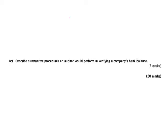Part C for seven marks asks you to describe substantive procedures an auditor will perform in verifying the company's bank balance. Presumably seven procedures would be required to get the seven marks. Remember, substantive procedures look at things such as valuation, existence, ownership, and perhaps accuracy. Good substantive procedures try to verify balances at the assertion level, so you need procedures which attack any of the relevant assertions.